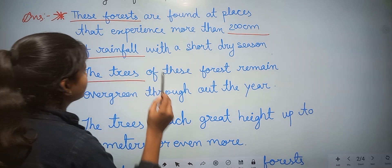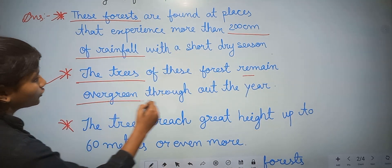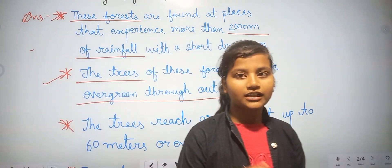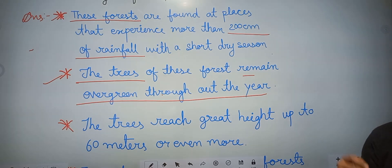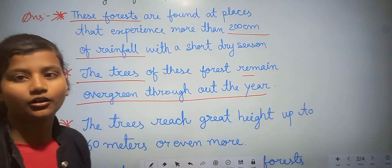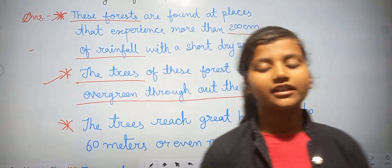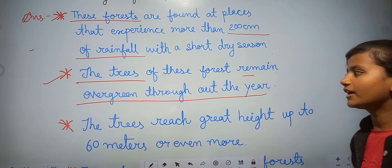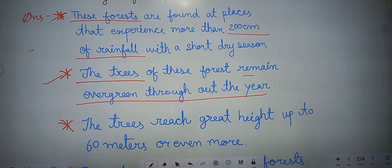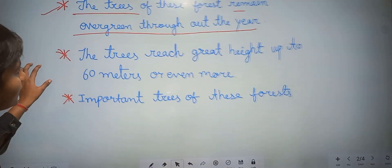The trees of these forests remain evergreen throughout the year. Why does this forest remain evergreen throughout the year? Because it receives 200 centimeters of rainfall — that's why this forest remains evergreen throughout the year.